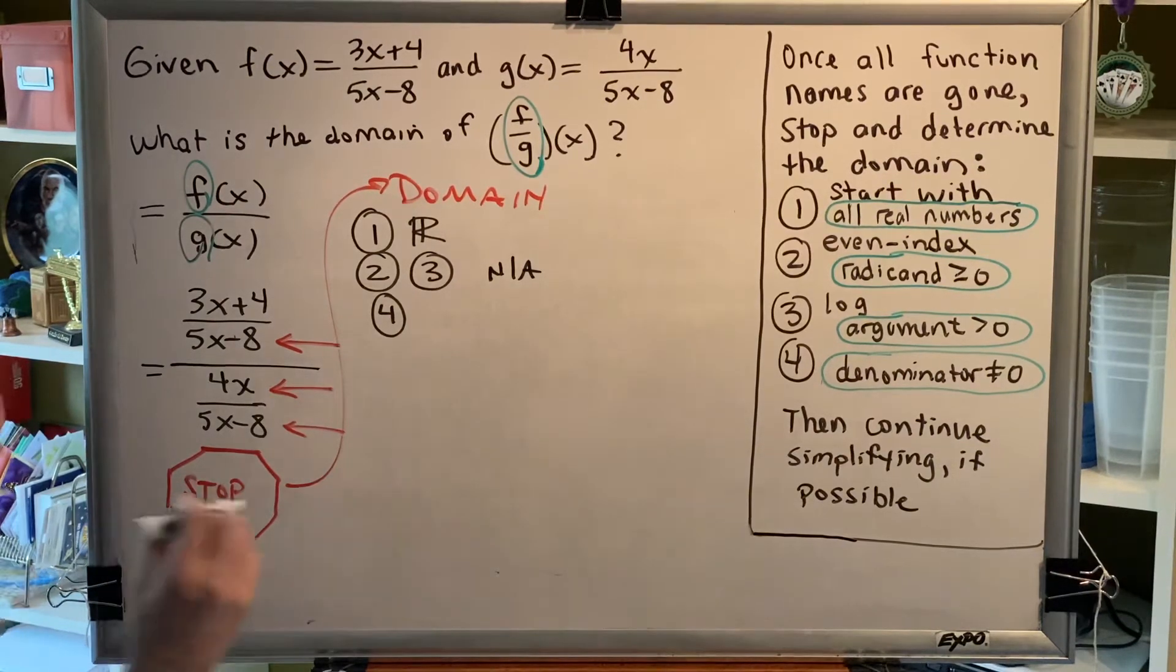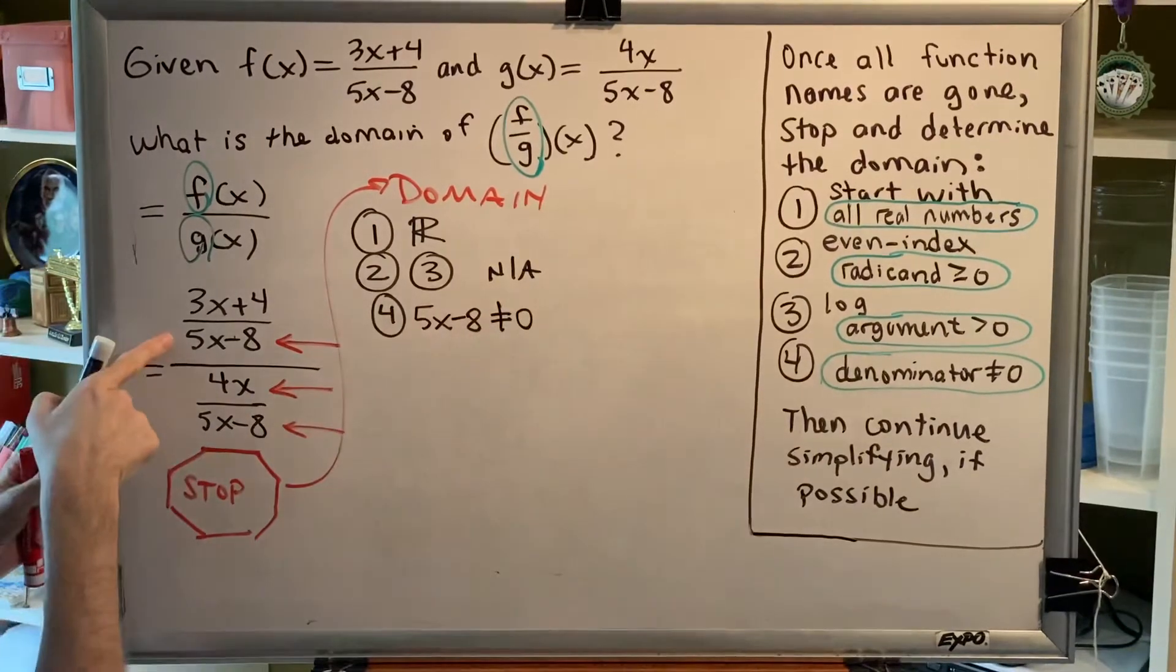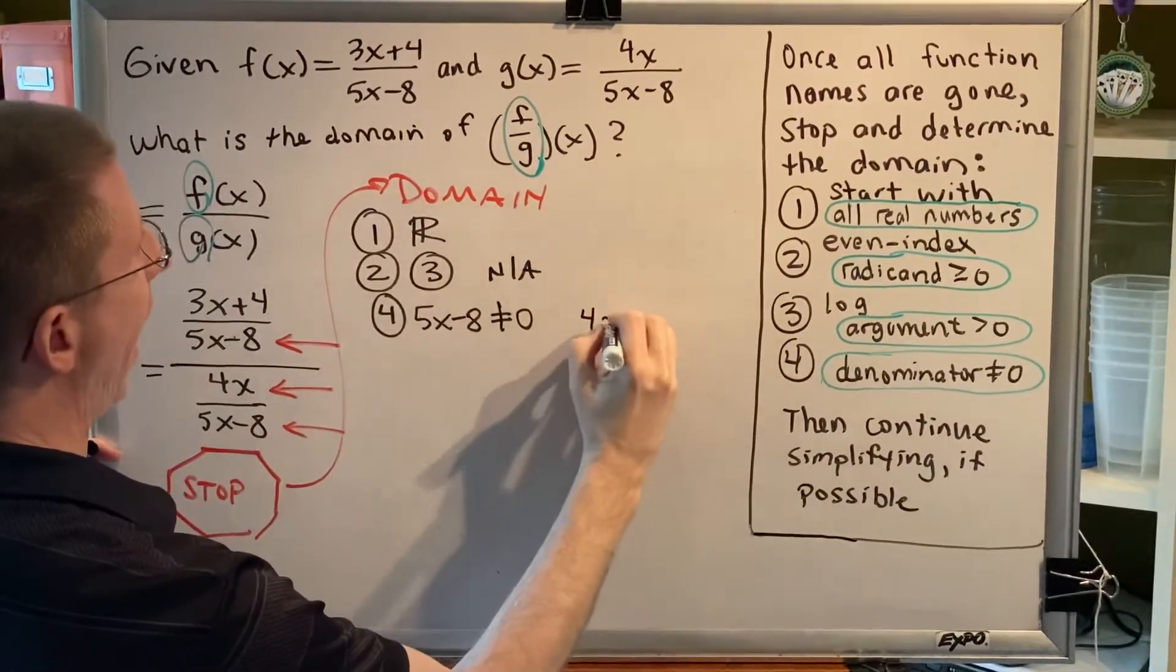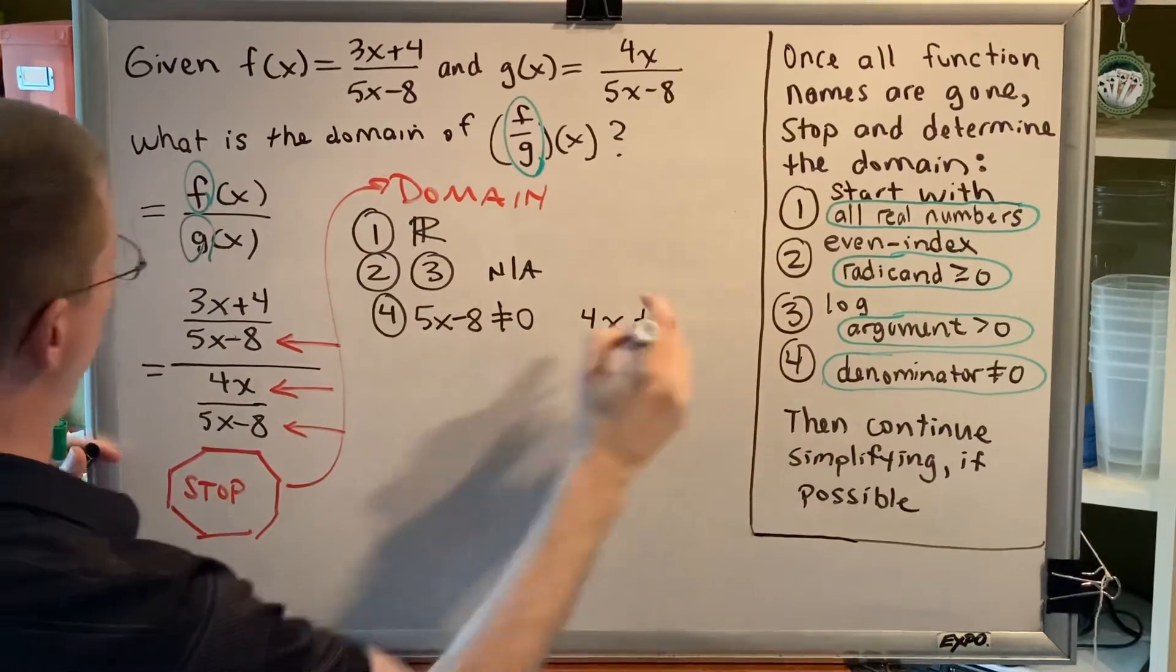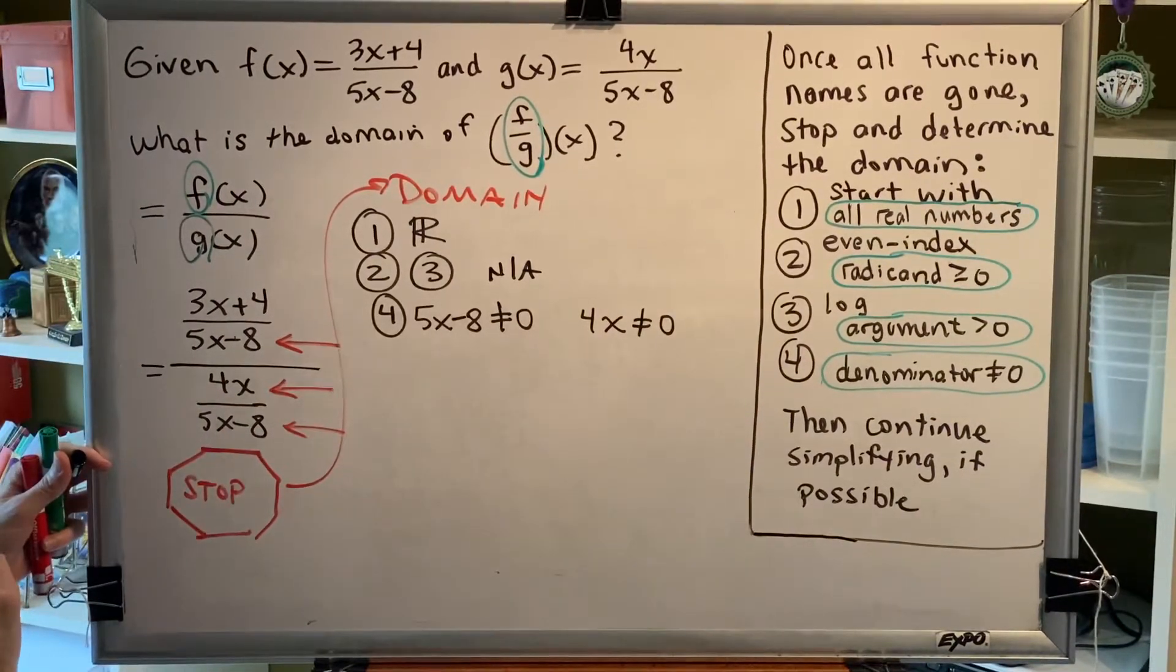So that gives us the following statements. 5x minus 8 is not allowed to be zero. That's this one. 4x is not allowed to be zero. That's this one. And 5x minus 8 is not allowed to be zero, which we already have, so there's no need to write it twice.